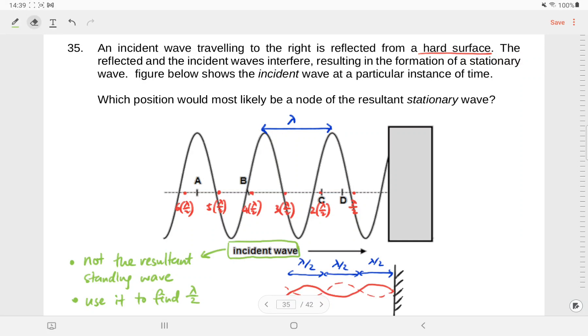In this question, an incident wave is moving to the right and reflected from a hard surface. Eventually we get a standing wave. The question asks which position is most likely a node of the resultant standing wave.